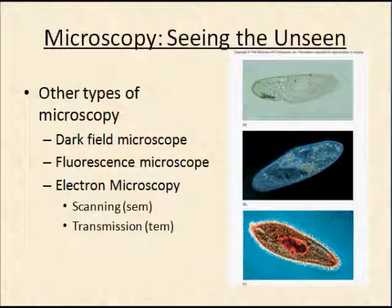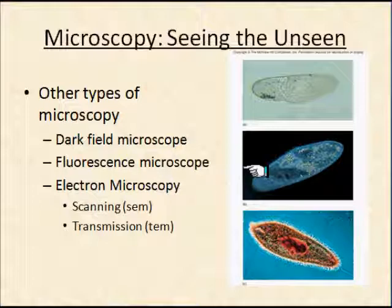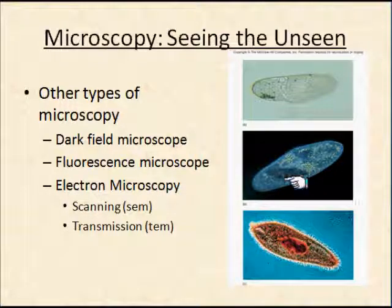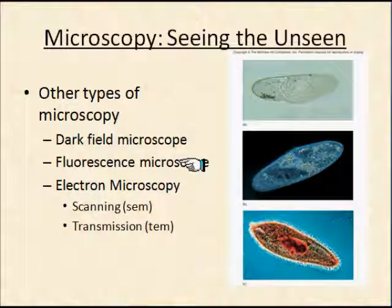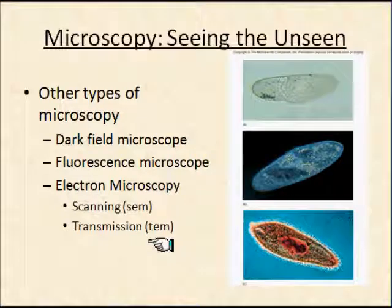Other types of microscopy can help. You can use dark field microscopy — it doesn't require anything too special. A filter placed on a light microscope gives you a dark field and shoots light through the microorganism, allowing you to visualize structures you might not otherwise see. There's also fluorescence microscopy and electron microscopy. The disadvantage of both fluorescence and electron microscopy is that the sample has to be dead, so you can't observe the activity of structures.